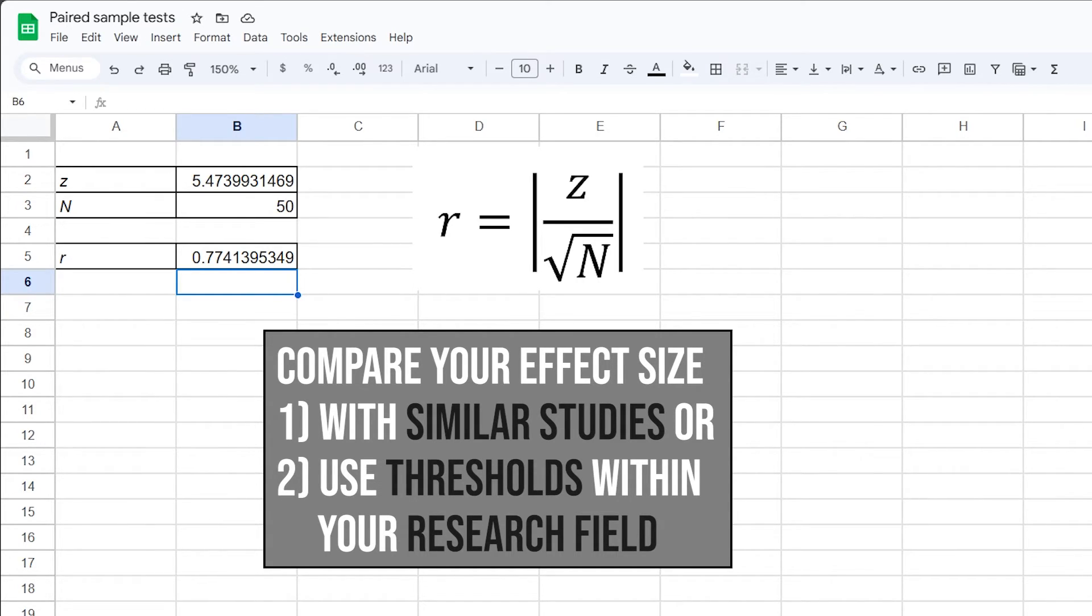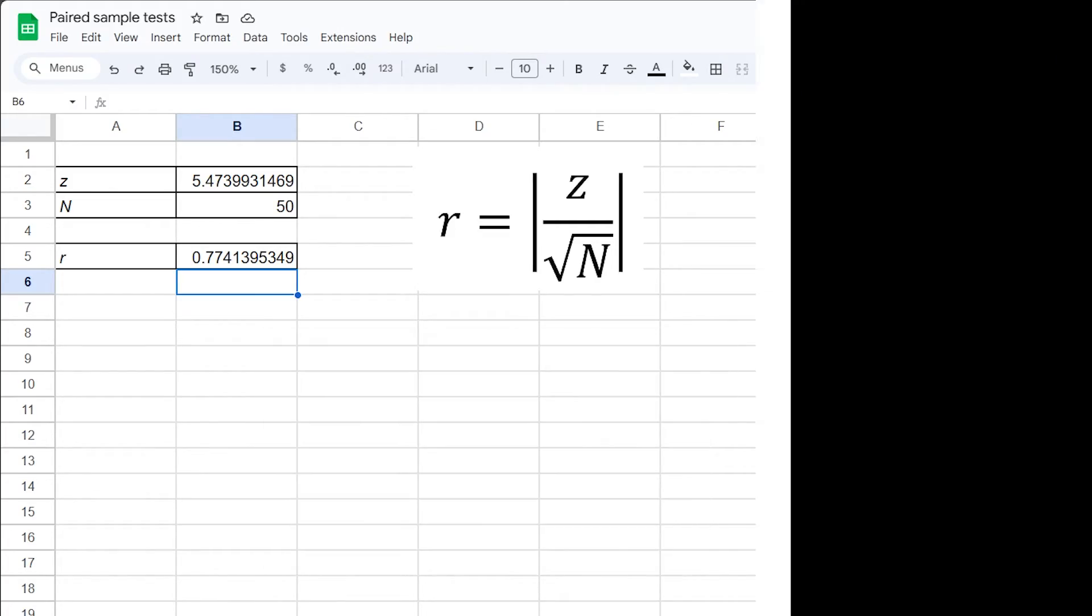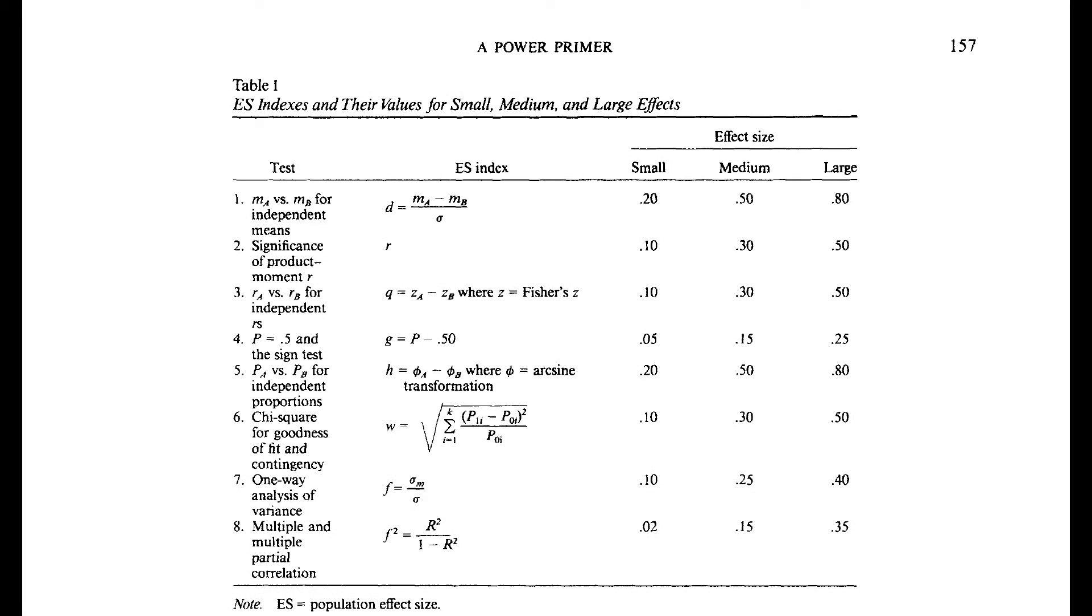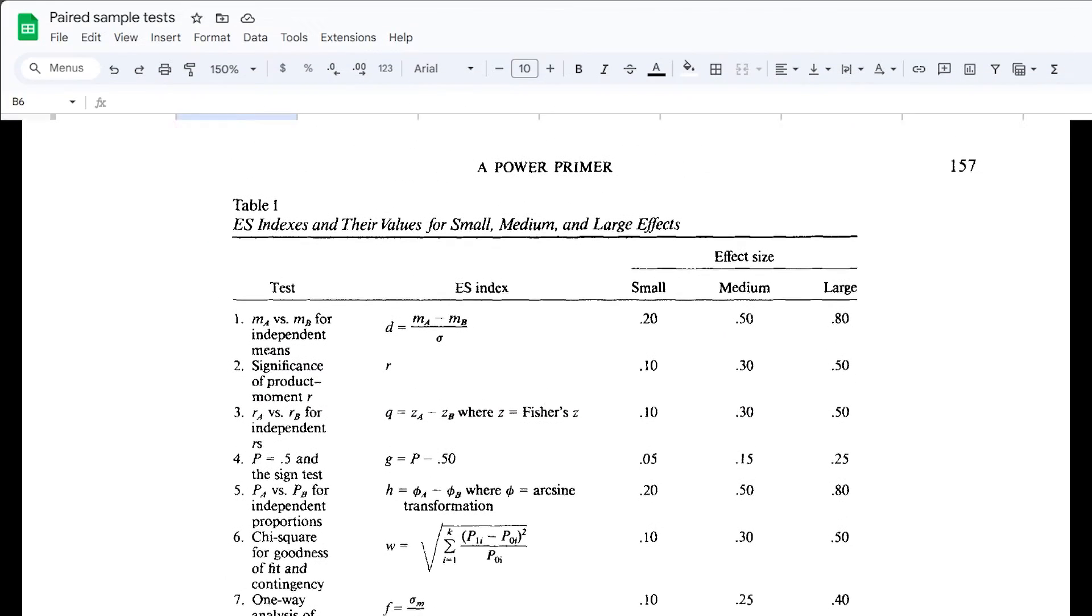If no comparable study exists though, use the common threshold within your research field. If those are also nonexistent, you can refer to Cohen 92, a power primer on page 157, which shows three thresholds for the effect size r with 0.1, 0.3, and 0.5 for small, medium, and large effects.